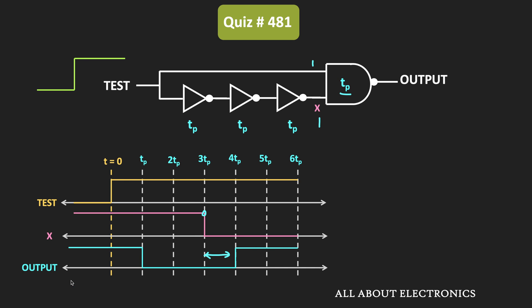As mentioned, for the NAND gate, when any one of the inputs is low, its output becomes high. Since the x input remains low, the output of the NAND gate will remain high. So the output was initially high, then it becomes low, and after the 3 gate delay it becomes high again. The output of the NAND gate pulses from logic high to logic low to logic high.